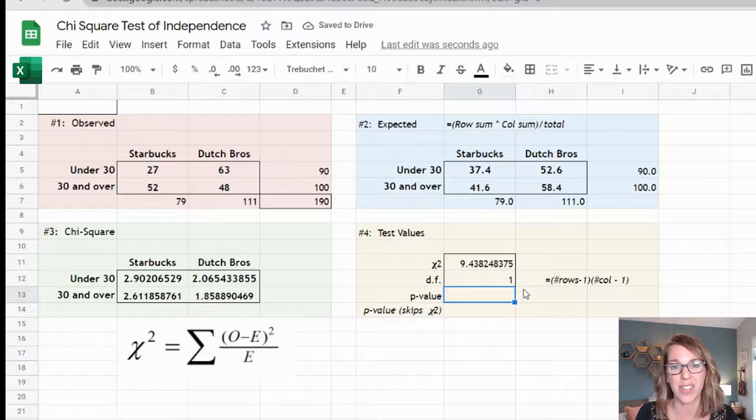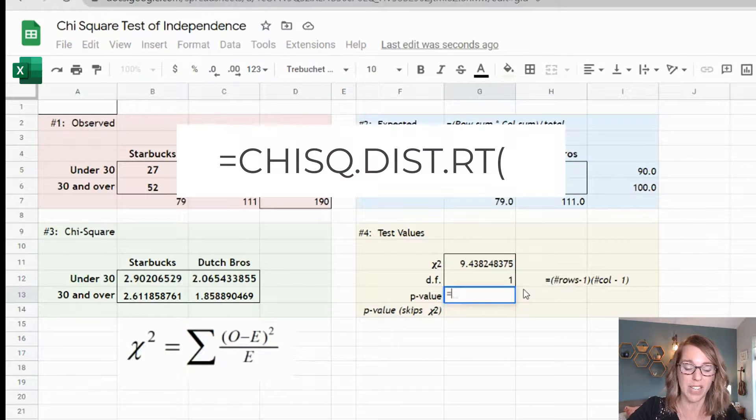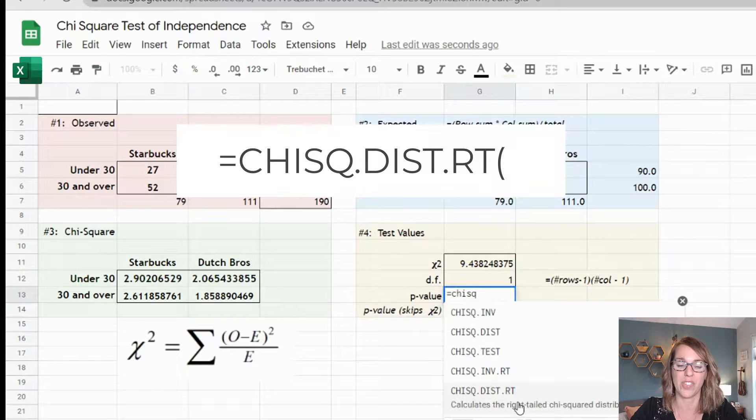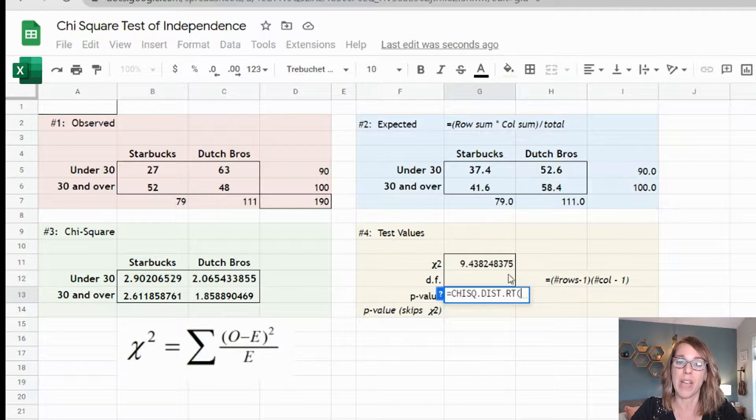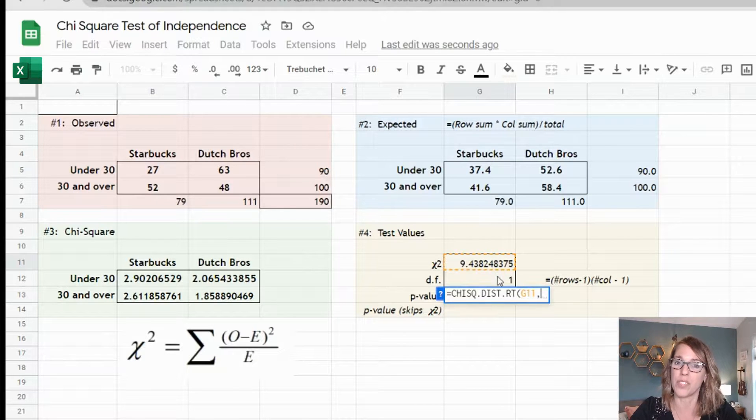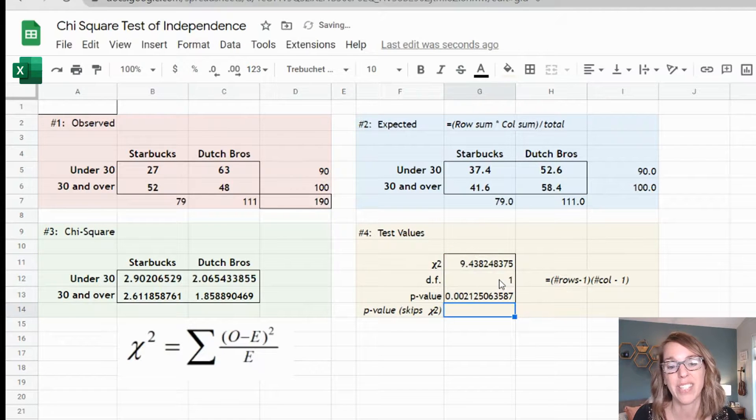Next for that p-value, I want to call the function chi-dist. I'm going to type in equals and then chi-square. I'm looking for that chi-dist right, which is this one here. I'm going to click on it and it's going to want my chi-score value first. So I click on that chi-score value, then comma, degrees of freedom. I click on my degrees of freedom and then we hit enter. This is my p-value .002, which is a fairly small p-value.